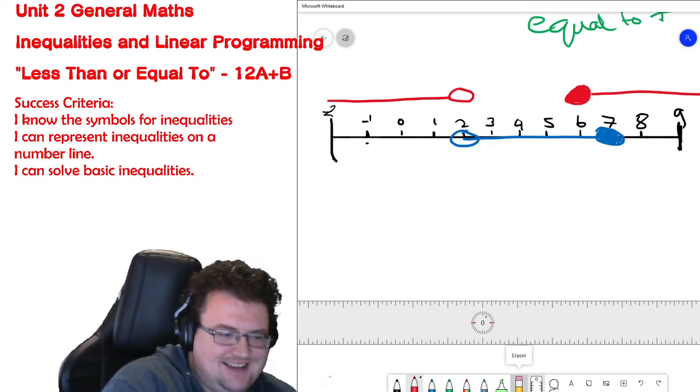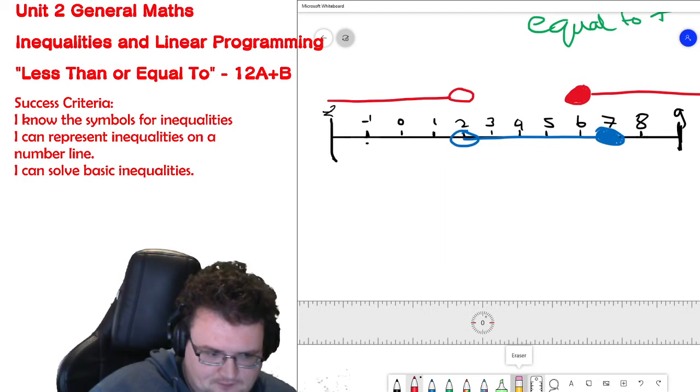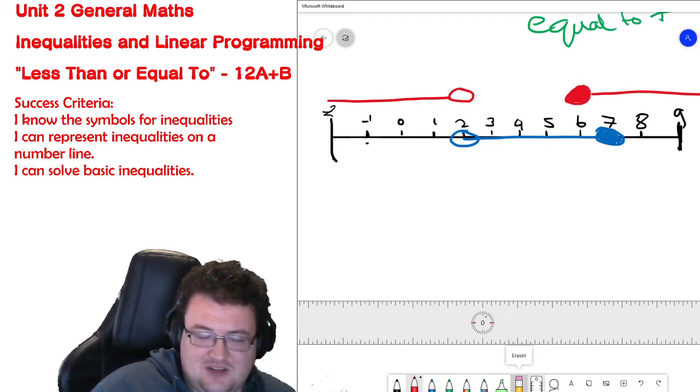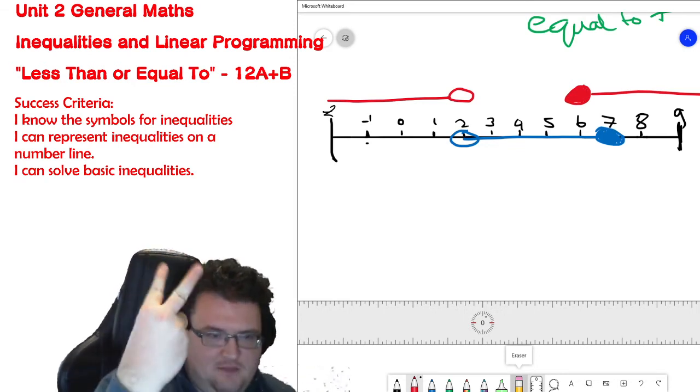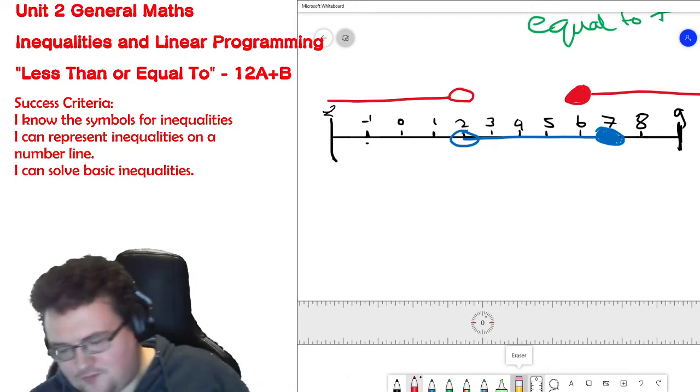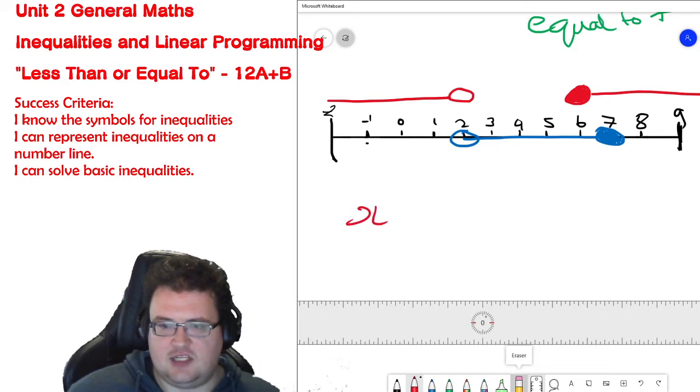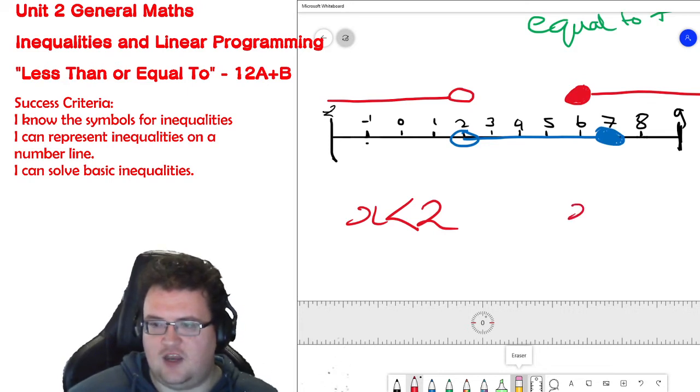You're on the right track. It's not less. X is greater than 6, but it's also equal to 6. 2 is less than x? No, x is less than 2. You actually need to create two statements because we know that x is less than 2, but we also know that x is greater than or equal to 6.